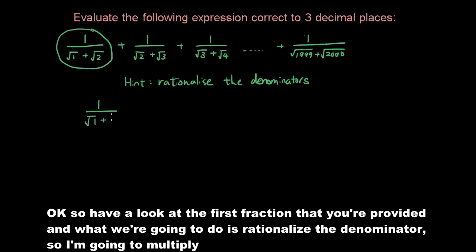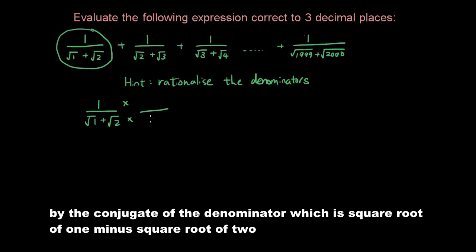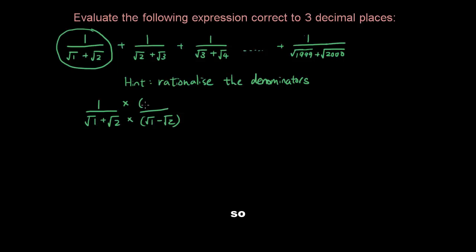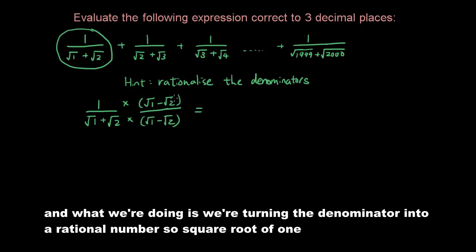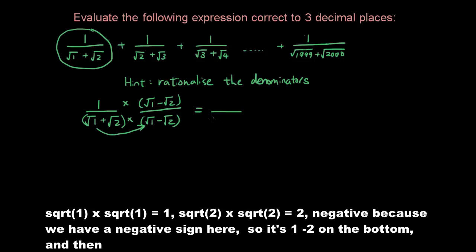So I'm going to multiply both the numerator and the denominator by the conjugate of the denominator, which is square root of 1 minus square root of 2. So the fraction remains equal, and what we're doing is turning the denominator into a rational number. Square root of 1 times square root of 1 is 1. Square root of 2 times square root of 2 is negative 2, because we have a negative sign here. So it's 1 minus 2 on the bottom.